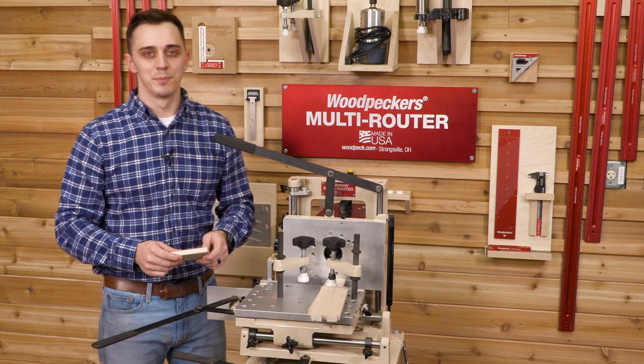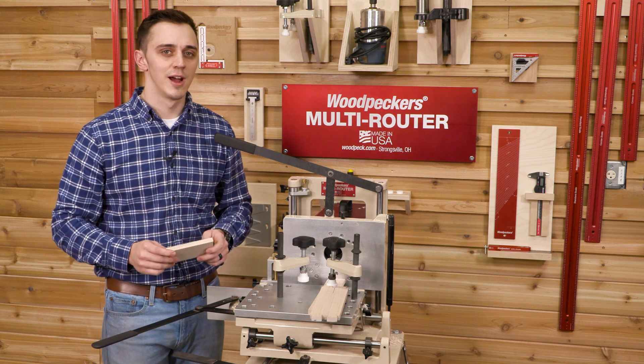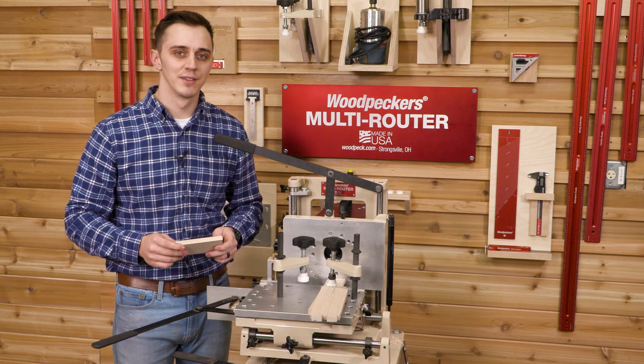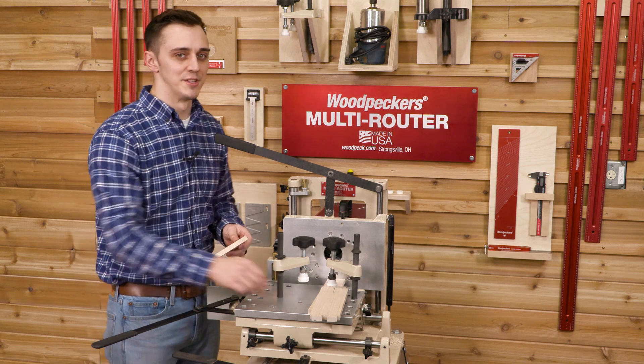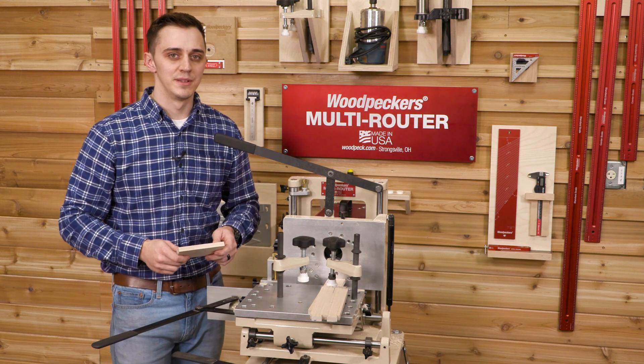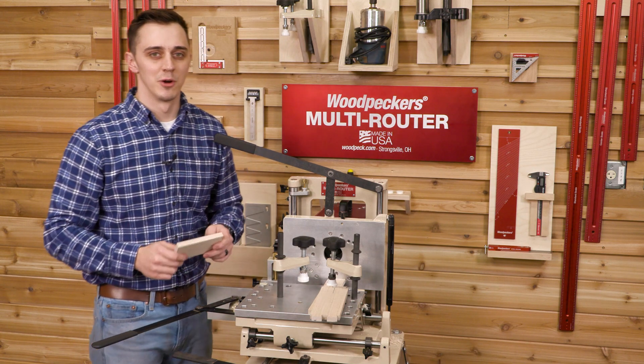Before we move on to cutting the pins, we're going to cut the tails on a scrap piece that is roughly 5 inches in length and matches the width and thickness of our current material. We'll use this scrap piece to help dial in the perfect fit for our pins.